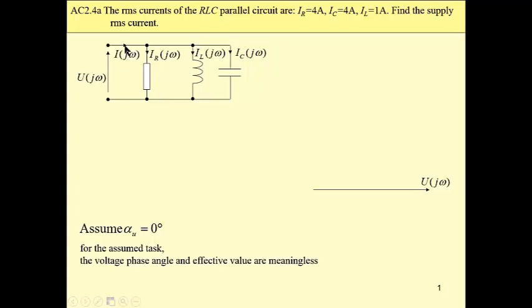The problem is to find the effective value, the root mean square value, of the total current. We will use a phasor diagram to find this current. We may assume that the input voltage has a given value and its initial phase angle is zero.